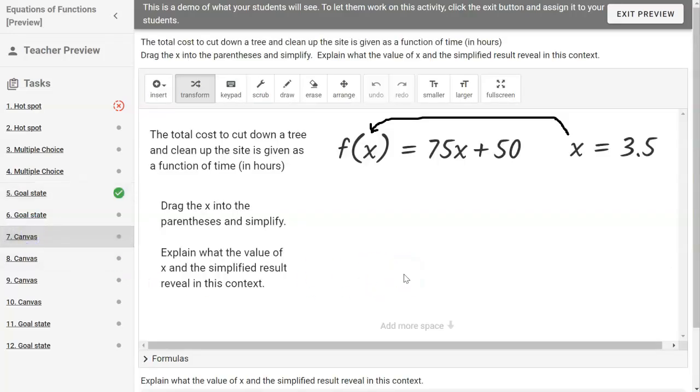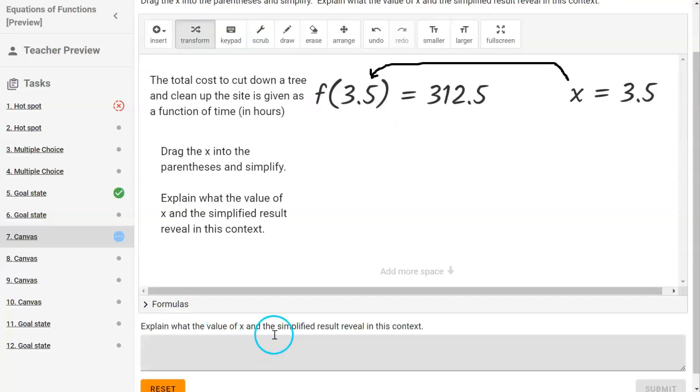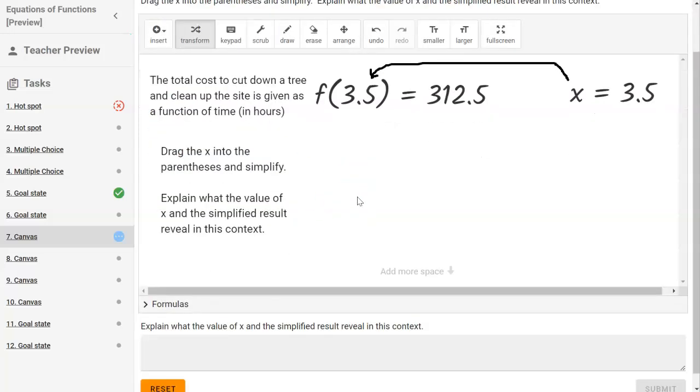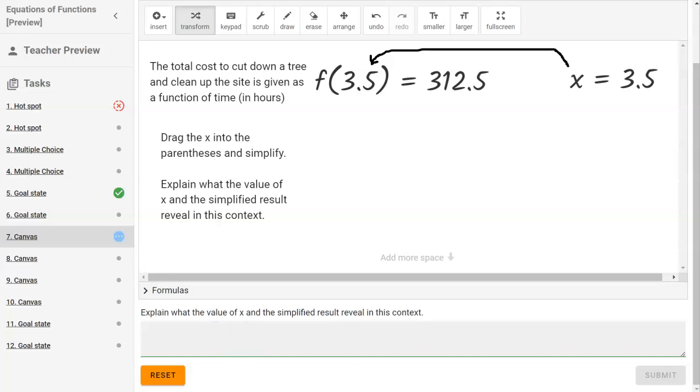All right now the canvases are you have to actually get in here and grade these. So when you do this problem it says drag the x into the parentheses. There's a lot of text here. You might want to do this as a whole class if they've not done it before. I think we had this on one other activity where they grab the x and put it in the parentheses and then it just replaces the x with that number 3.5. And then you would simplify this. And when you do then you're going to answer this question. What does the value of x, the 3.5, and that simplified result 312.5 mean in this context? And the context is right here. I put it right next to the problem but also up here in the directions. What does this mean? So they have to type a sentence or two in this space. They will not be able to submit until they type something.